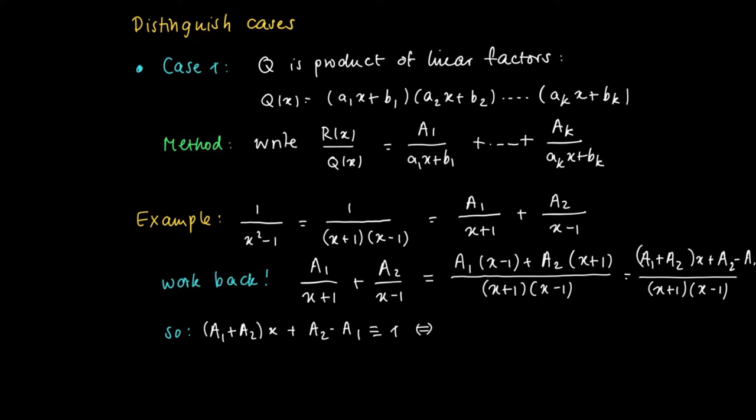But this can only hold if the variable part (A₁+A₂)x vanishes, or put in other words that A₁+A₂ should be 0, and the remainder term is A₂-A₁ = 1. So if we solve for these two linear equations with two unknowns, we find A₁ = -1/2 and A₂ = 1/2.